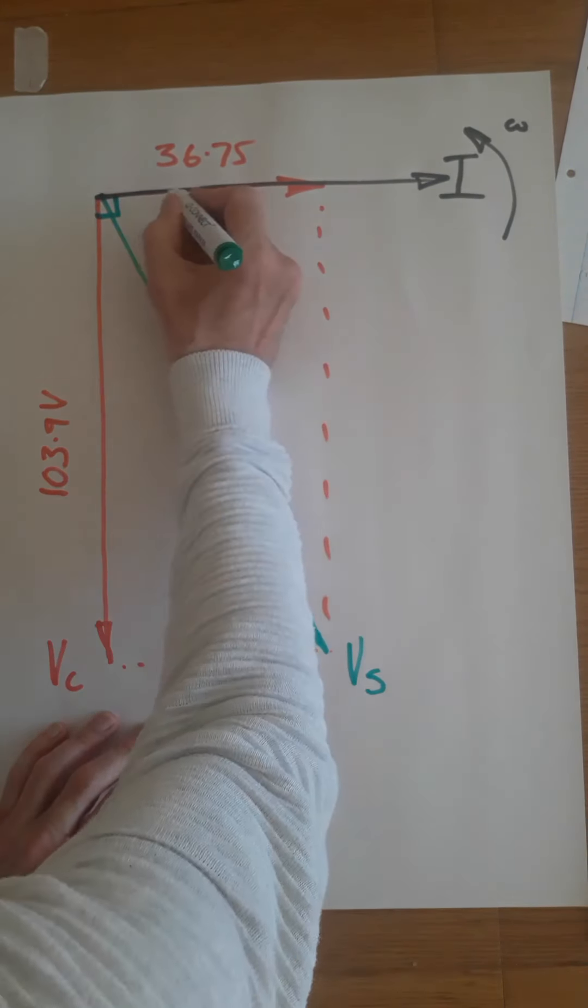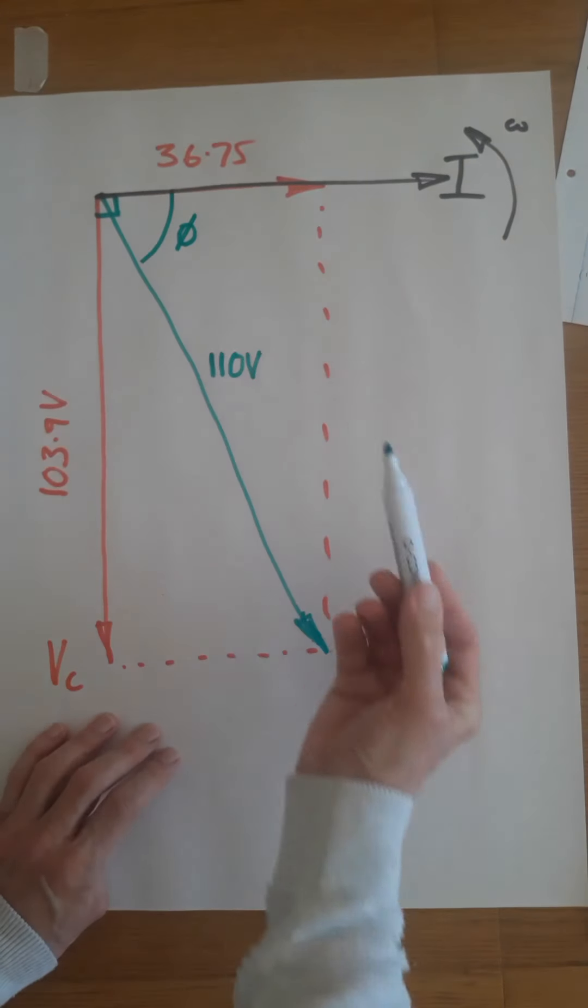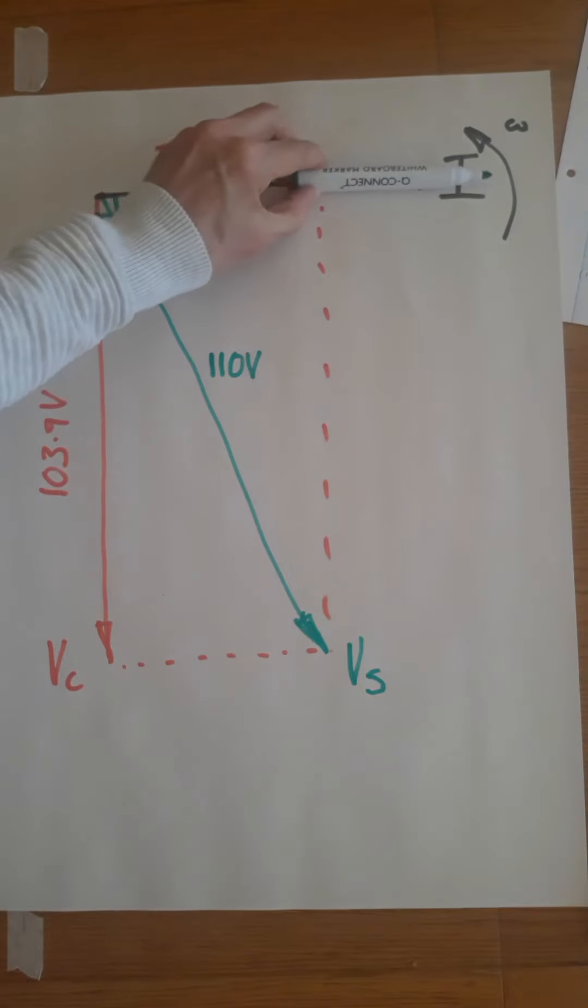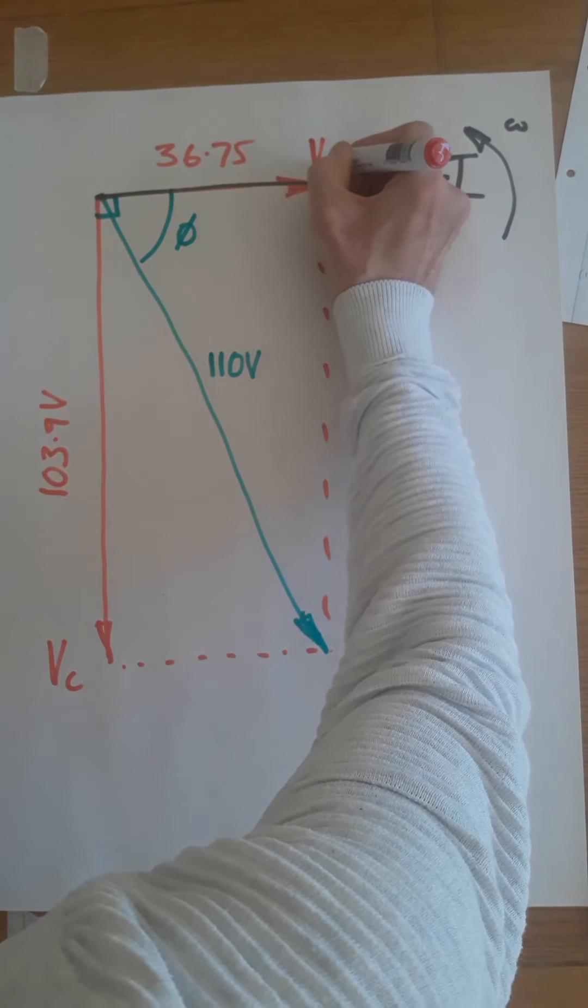The final bit to mark on here is the phase angle phi. The phase angle always appears between the supply current and the supply voltage.